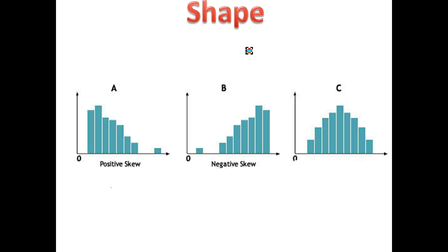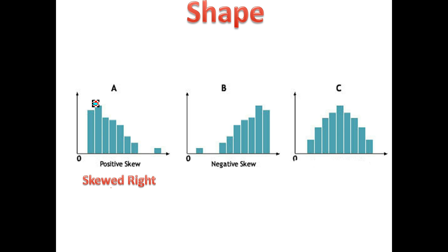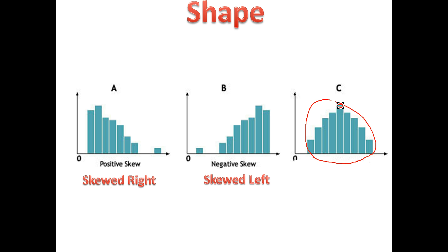Now you have the shape of a distribution. AP Statistics teachers want you to do this in a very particular way — you have to say these specific words. If most of the data is clustered on the left side, you say it's skewed right. If most of the data is on the right, you say it's skewed left. I know it's an odd way of thinking, but remember: look at what side most of the data is on, and it's skewed to the opposite side. Most data on the left means skewed right; most data on the right means skewed left. And if the graph looks balanced on both sides, we just call it symmetrical.